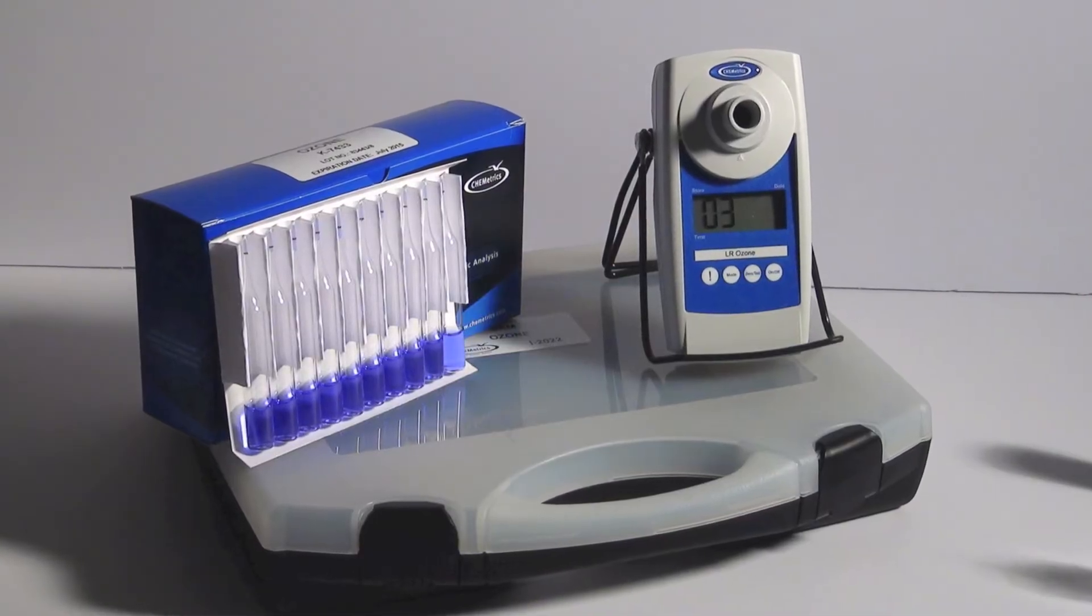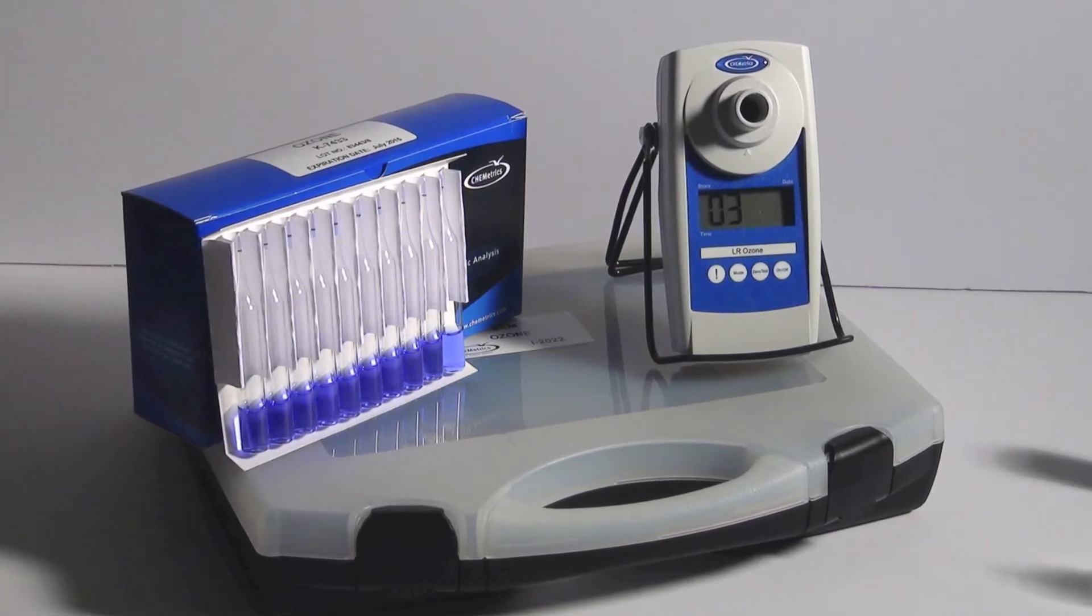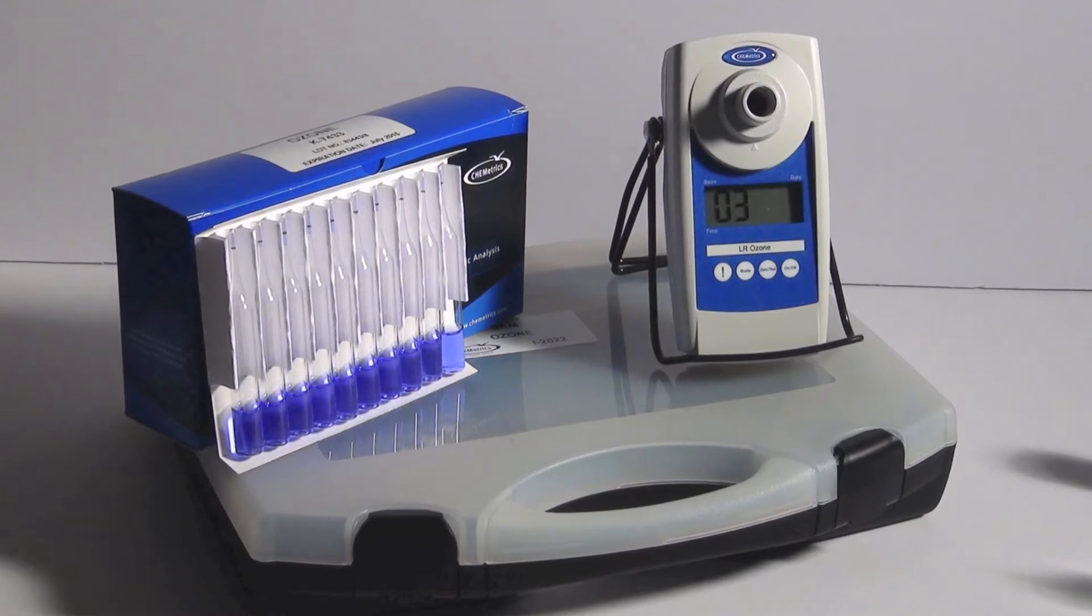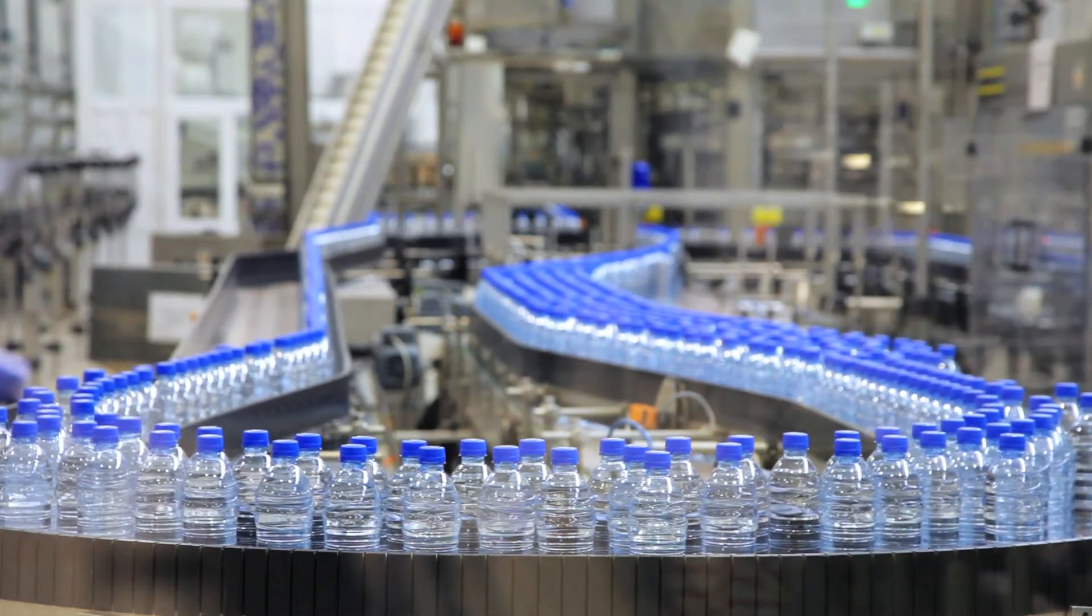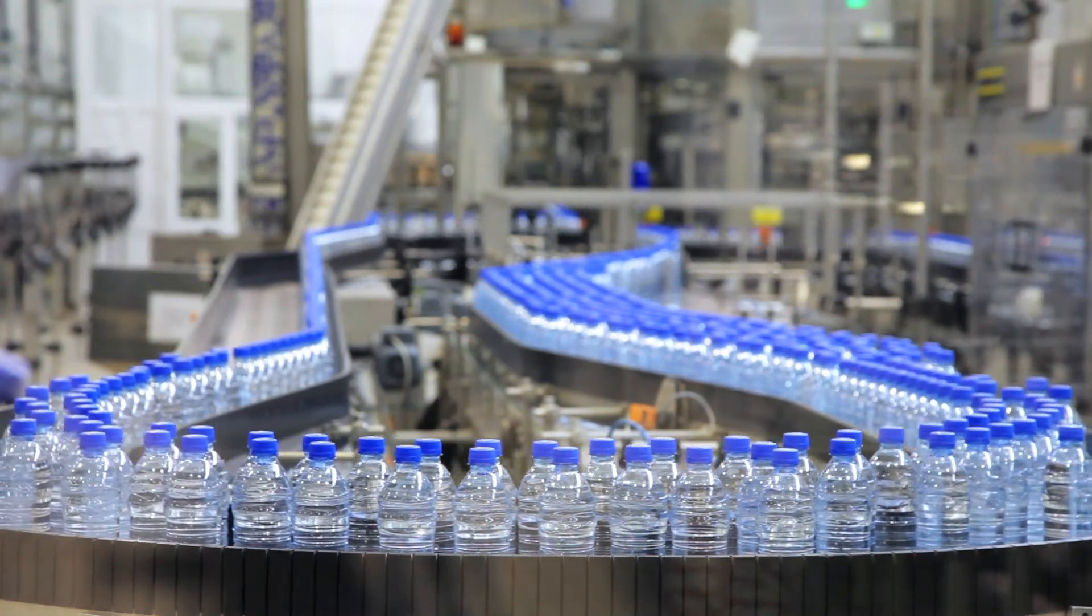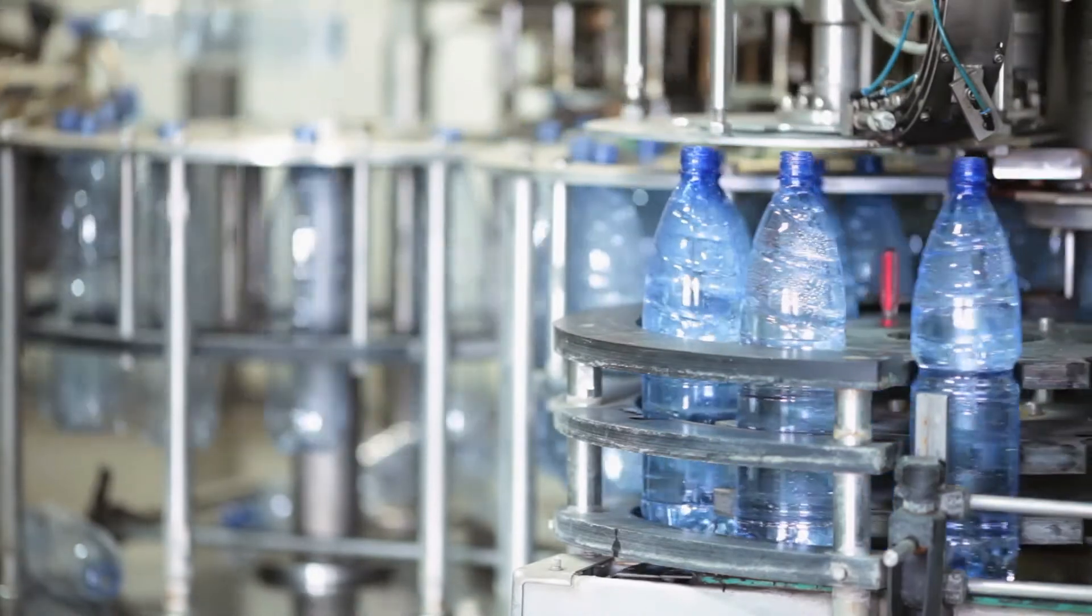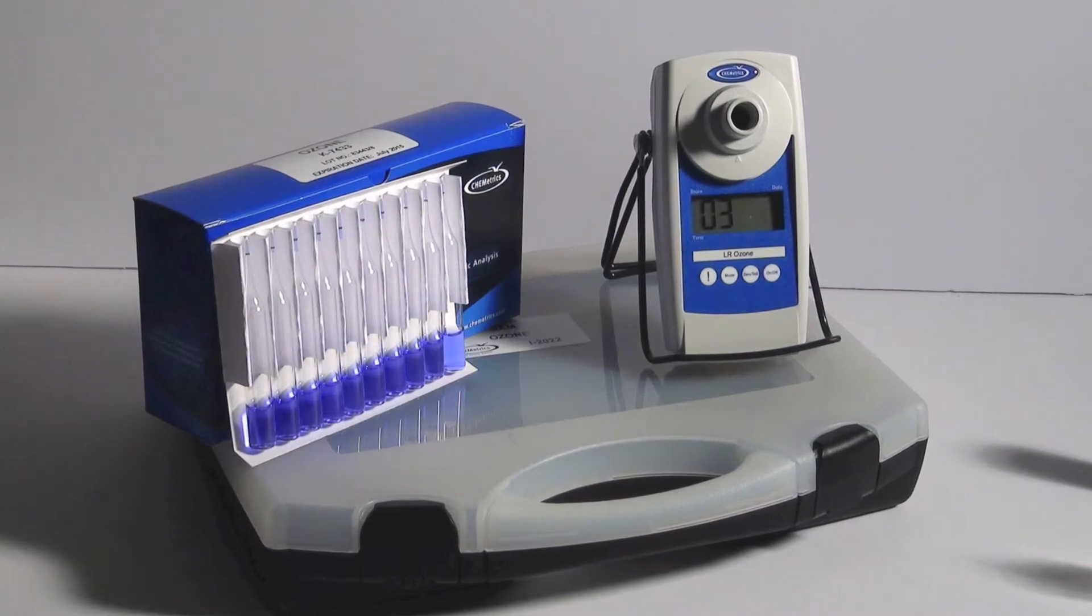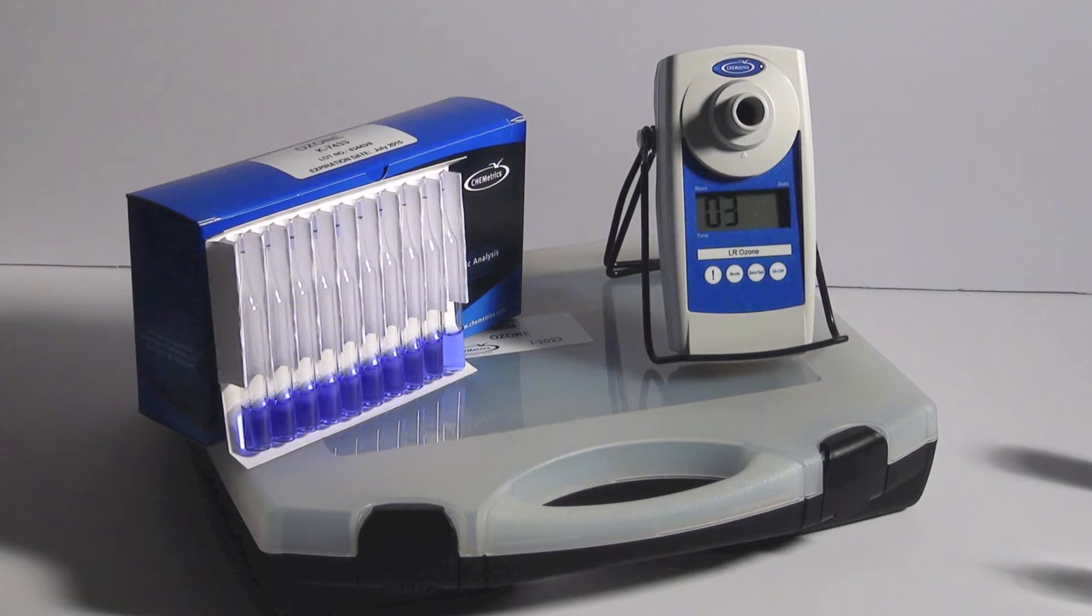Kemetrics K-7433 Ozone Vacuvials Test Kit employs the broadly accepted indigo colorimetric chemistry packaged in vacuum-sealed self-filling ampoules. Designed to quickly and accurately measure ozone levels following disinfection treatment, the kit meets FDA control point requirements for bottled water. It features an innovative self-zeroing technology that eliminates the need to generate a reagent blank, using only one ampoule per test.